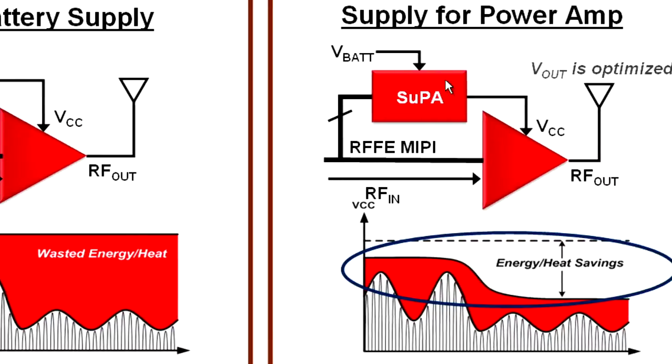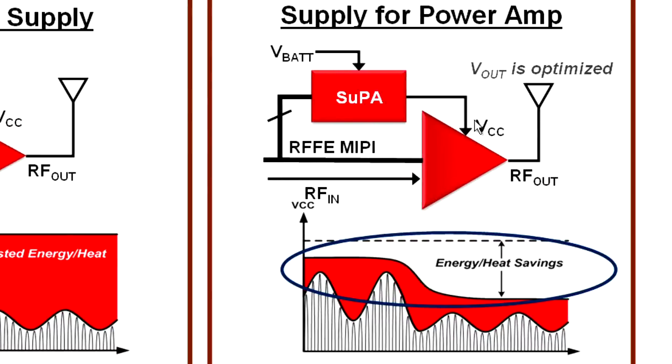Using SUPA device, this output voltage or actually supply voltage for a power amplifier will be dynamically adjusted. So for high power levels, you will have higher VCC voltage and for lower output powers, this voltage will be brought down. As a result, we will have this energy or power saving, you will save heat on your PCB, you can make thinner phones and you can use your battery longer.